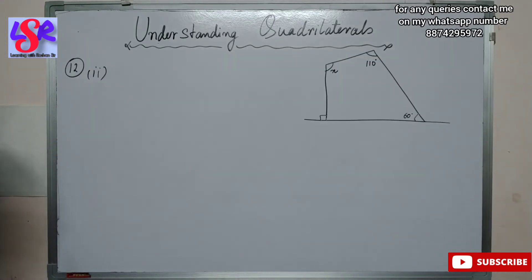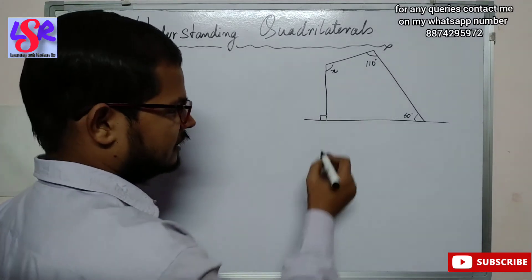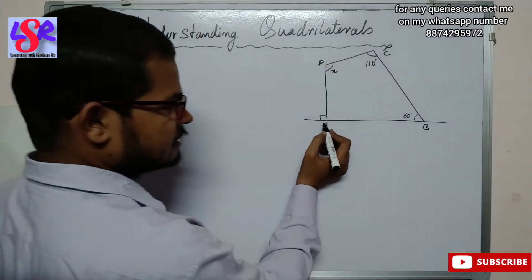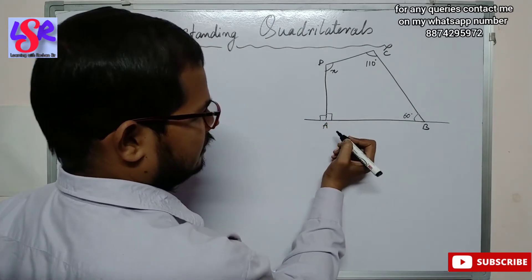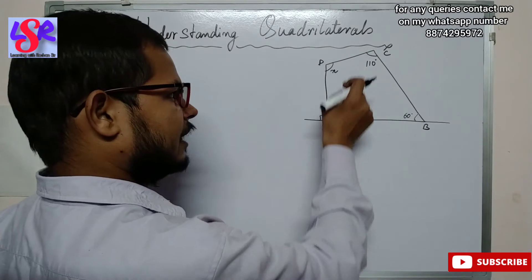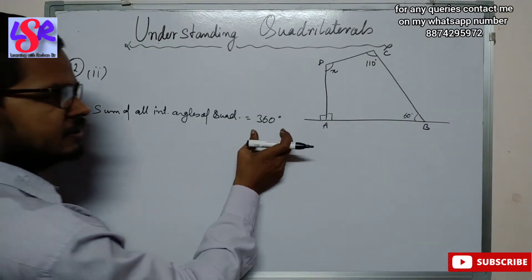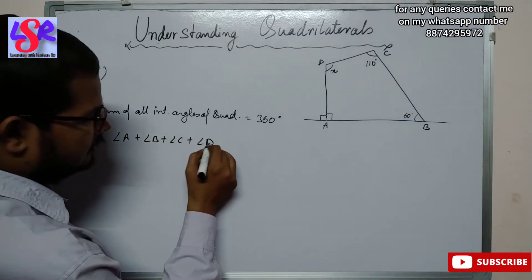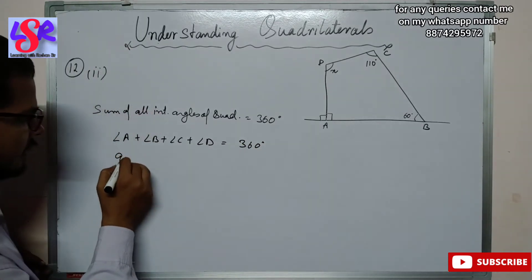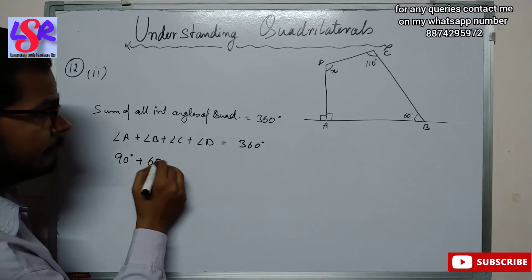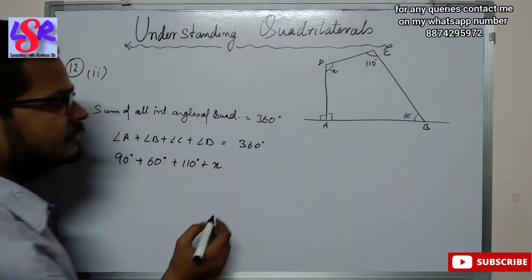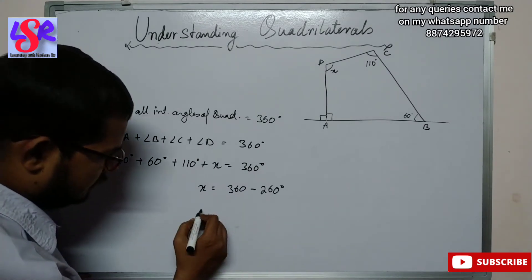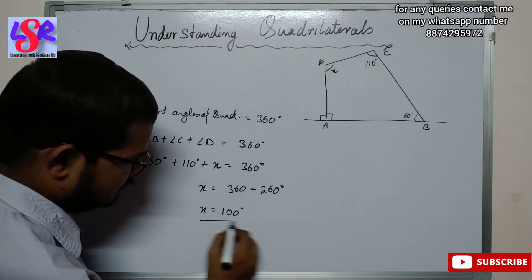Now the second part of question number 12. We have a quadrilateral A, B, C, D where two sides are perpendicular, so two angles are 90 degrees each. The sum of all interior angles equals 360 degrees: 90 plus 60 plus 110 plus x equals 360 degrees. Solving, x equals 360 minus 260, so x equals 100 degrees.